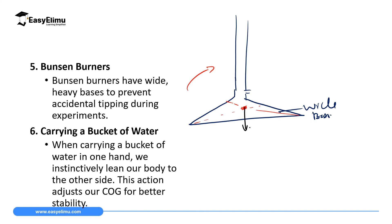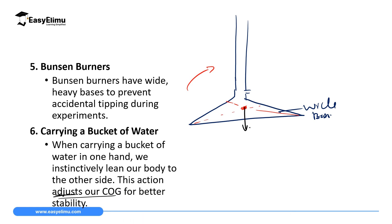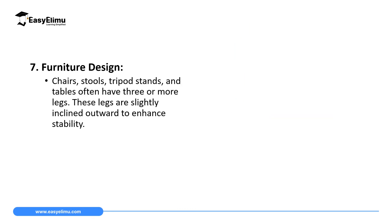The sixth application is carrying a basket of water. When you carry a basket of water in one hand, you instinctively lean your body toward the opposite side. You do this to adjust your body so that the COG is maintained in a stable position, ensuring stable movement — you are not lowering the COG but adjusting it to stay within the base.